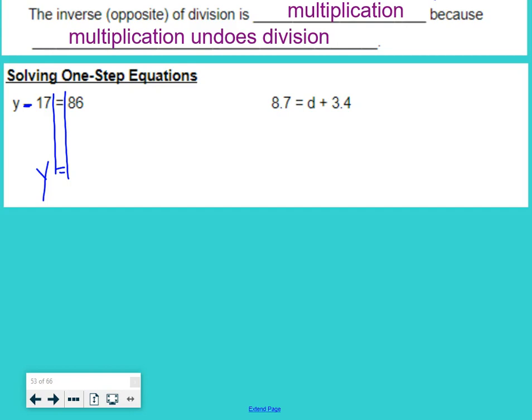To undo a minus 17, we do the opposite. Opposite of minus is plus, so we're going to add 17 on the left. But remember, with an equation, we have to keep the balance, which means we have to add 17 to the other side as well.